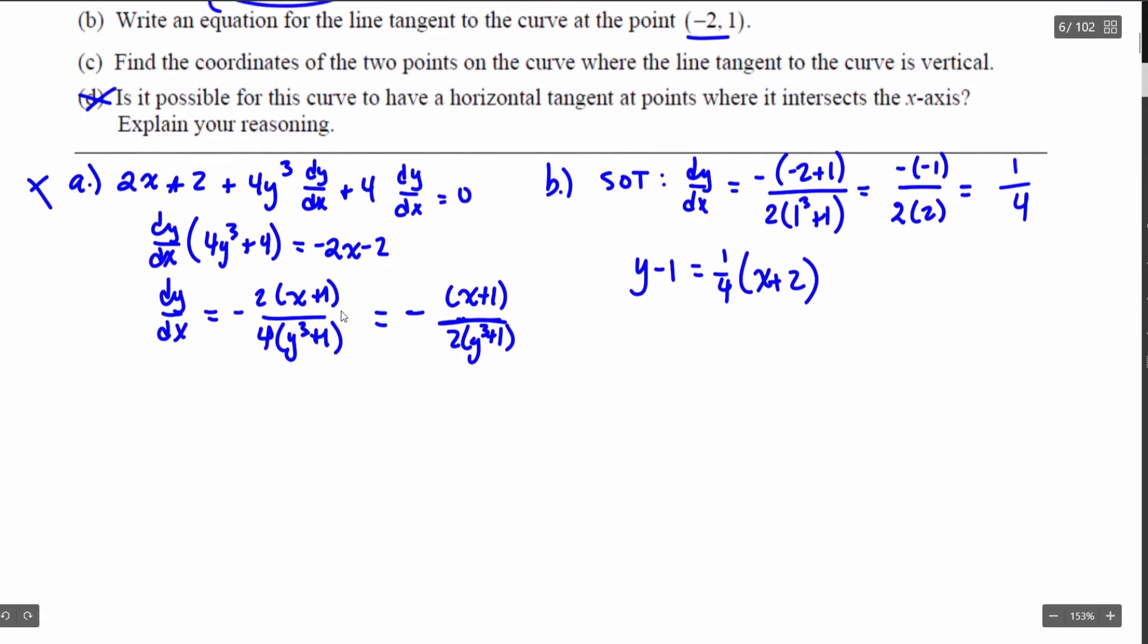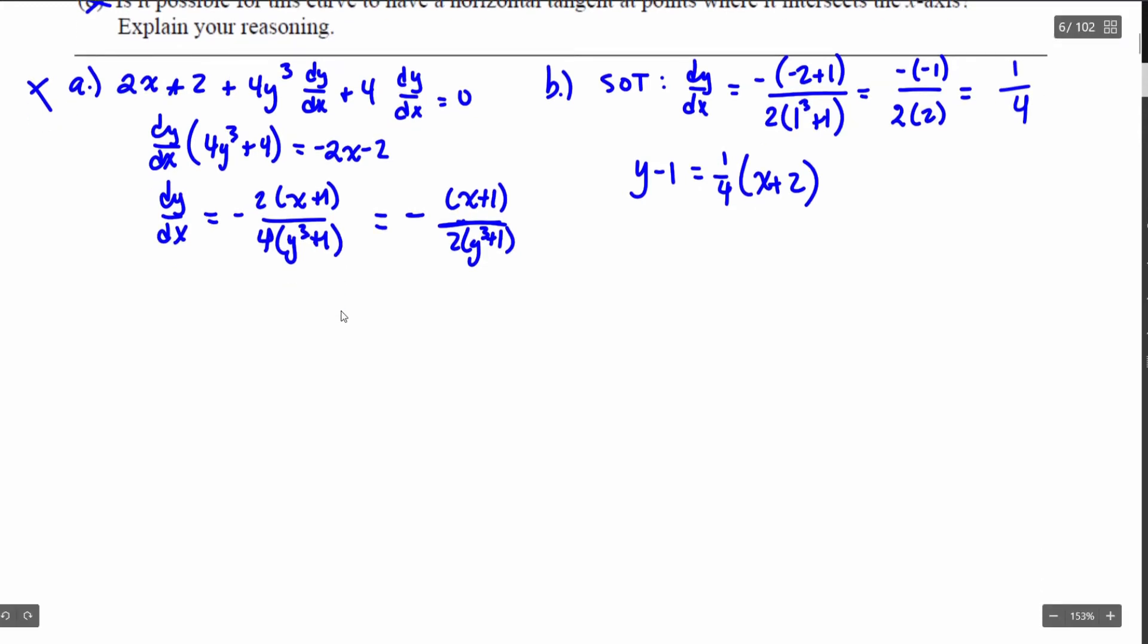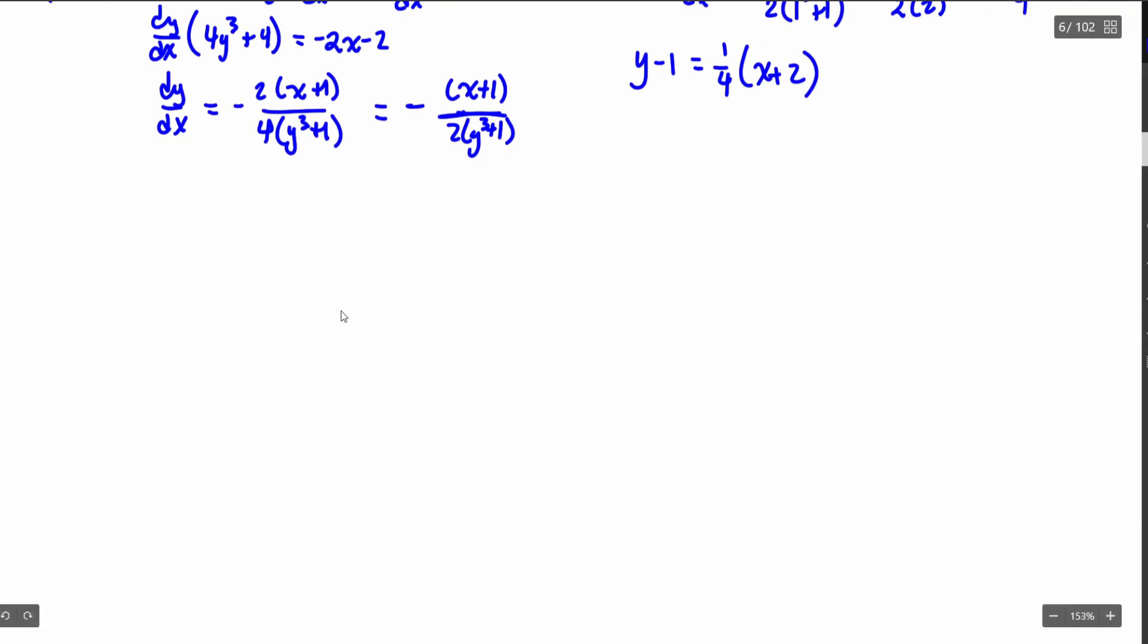Now finally I'm going to move on to part c where I'm going to need a little bit more room and I'm going to find the coordinates of the two points on the curve where the tangent line is vertical.